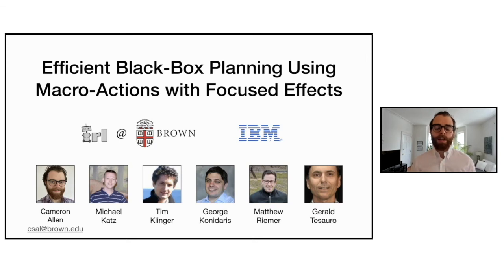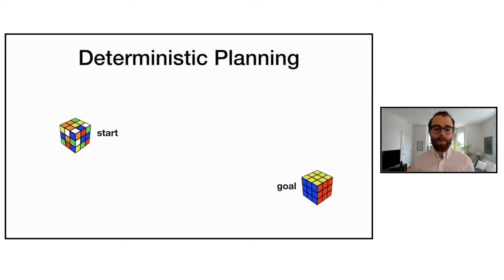This talk is about making black box planning more efficient through the use of macro actions with focused effects. The Rubik's Cube will be used as an example problem throughout, but the method described works for a wide variety of deterministic planning problems.